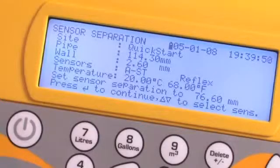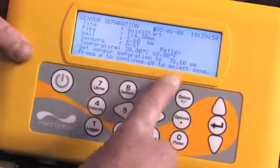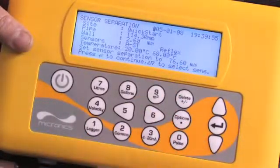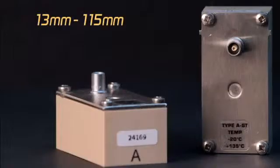the unit calculates which sensors to use and the separation distance to set them on the pipe, in this case to 76 millimeters, ensuring that the right type of sensor is selected. In this case, A standard for the standard sensors, for pipe sizes 13 to 115 millimeters.